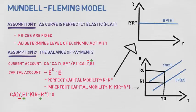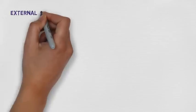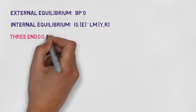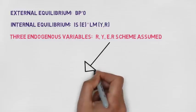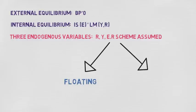So at a given level of income Y0, a depreciation in the exchange rate means there is an improvement in the current account, and so to stay balanced, the capital account has to become more negative. Assuming the foreign interest rate stays the same, the domestic interest rate falls from R0 to R1 at this given level of output. The key features of this model are: external equilibrium where the balance of payments equals zero, and internal equilibrium where the goods and money markets are in equilibrium. There are three endogenous variables: the real interest rate R, real income Y, and the exchange rate regime — either floating, where the nominal exchange rate E adjusts to maintain balance of payments equilibrium, or fixed, where the central bank intervenes to maintain the nominal exchange rate fixed.